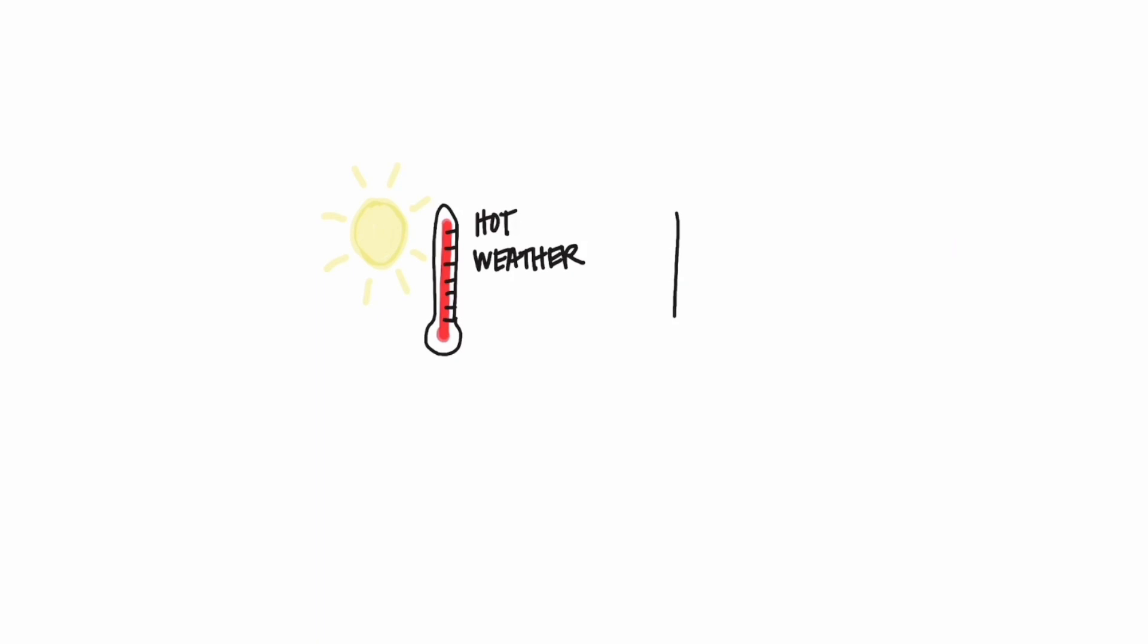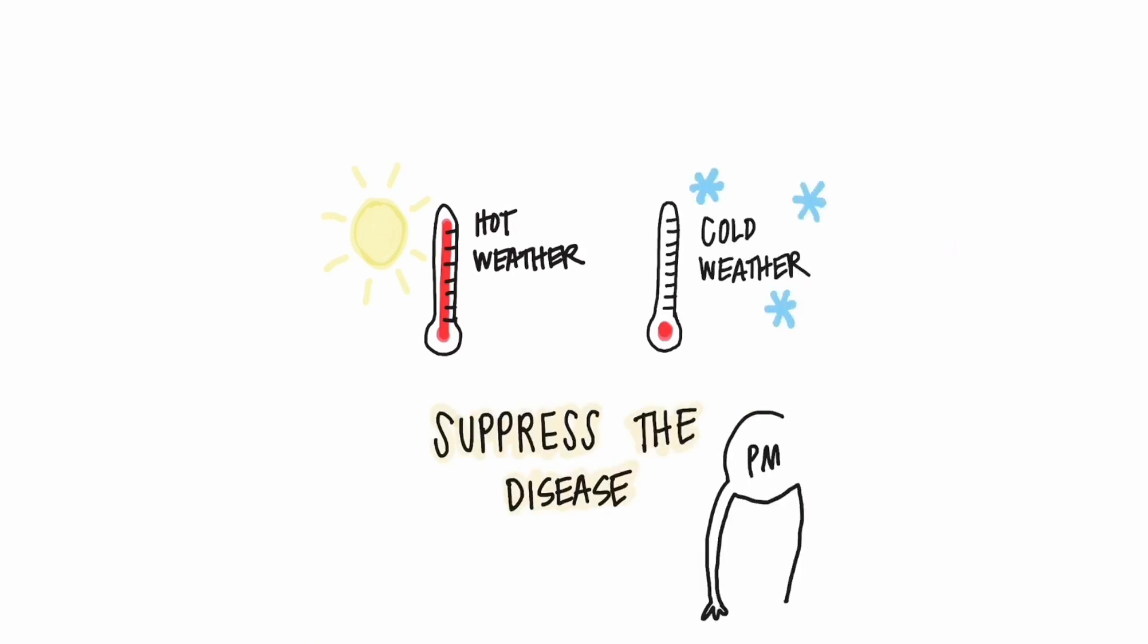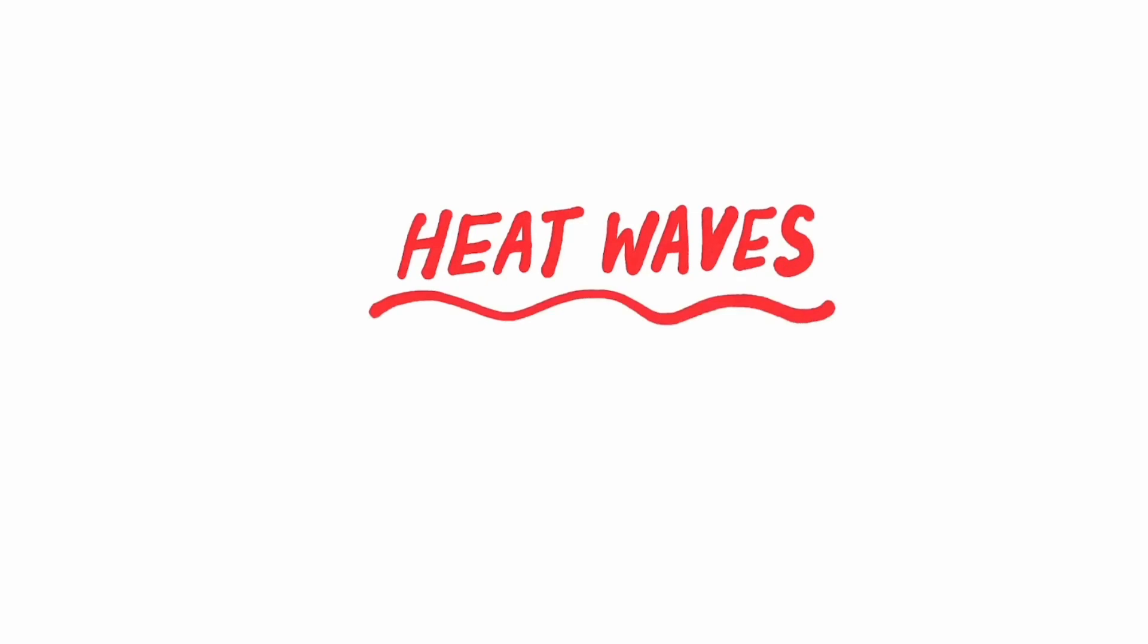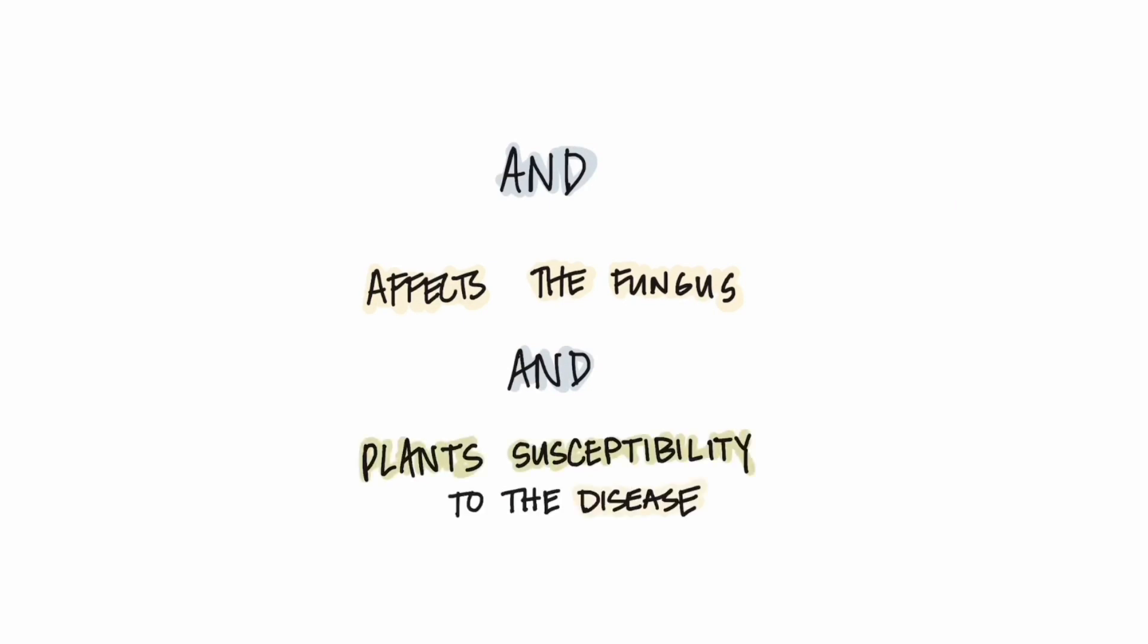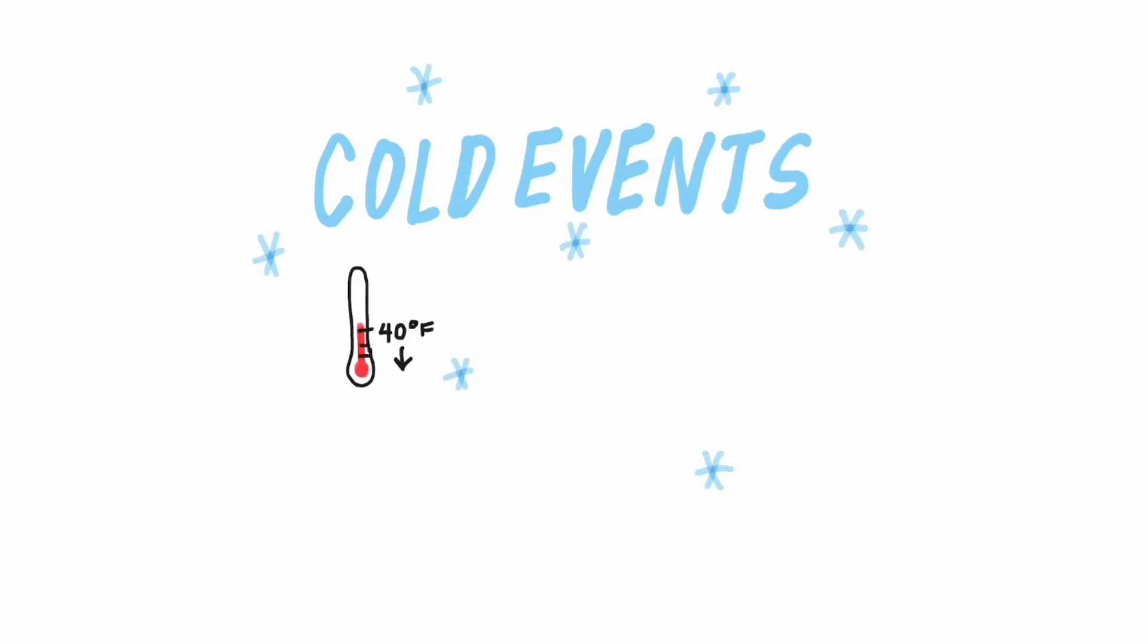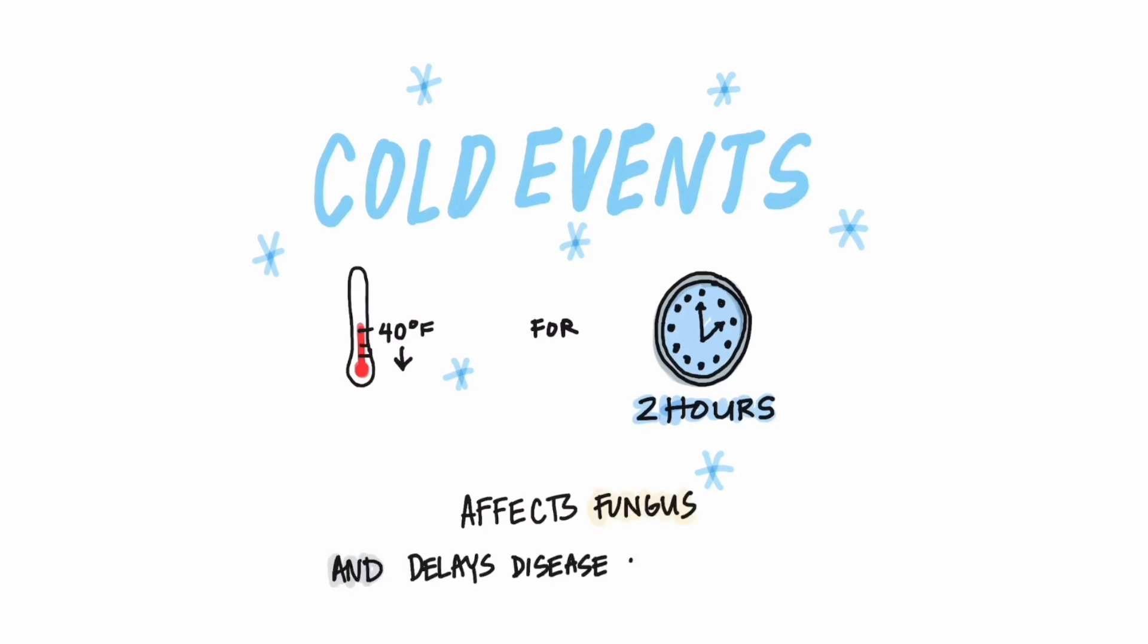Both excessively hot weather and cold weather suppress the disease. There are some differences between varieties, but heat waves where temperatures exceed 86 degrees for six or more hours for multiple days slow disease development. High temperatures affect both the fungus and plant susceptibility to the disease. Acute cold events where temperatures drop to 40 degrees or lower for at least two hours similarly affect the fungus and delay disease development.